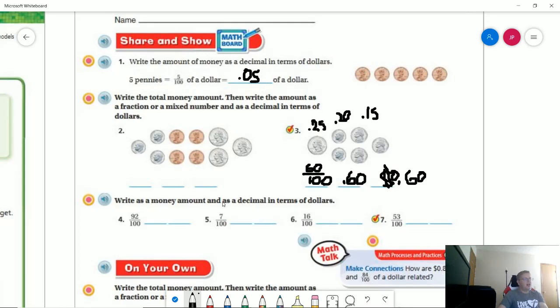All right. So the money amount and decimal in terms of dollars are both going to be the same thing. So they are both going to, for number five, be 0.07. It's just one of them is going to have the dollar sign in front of it.